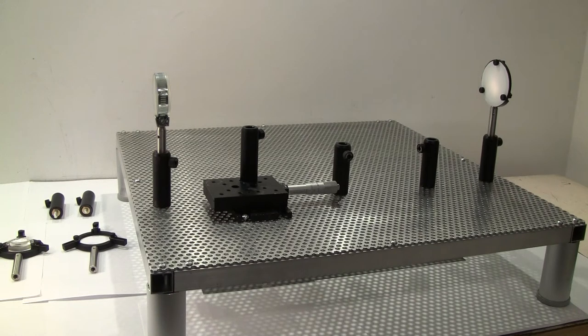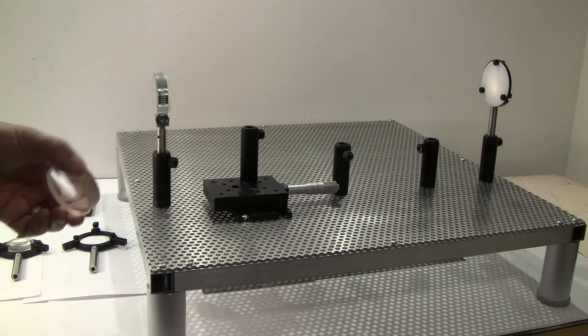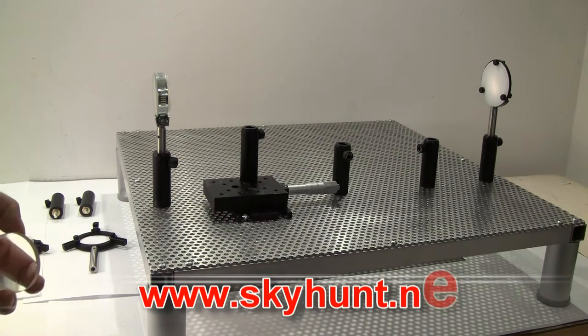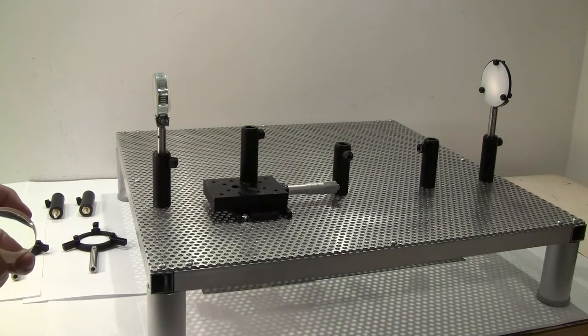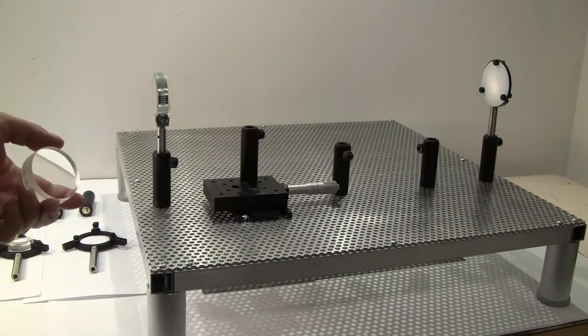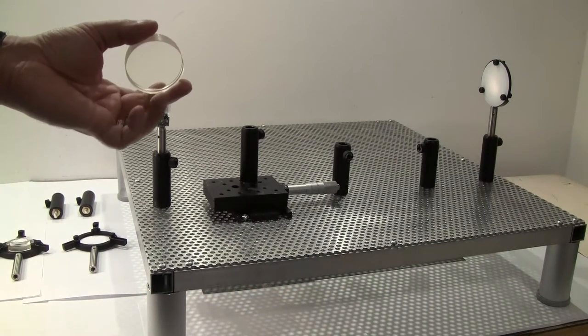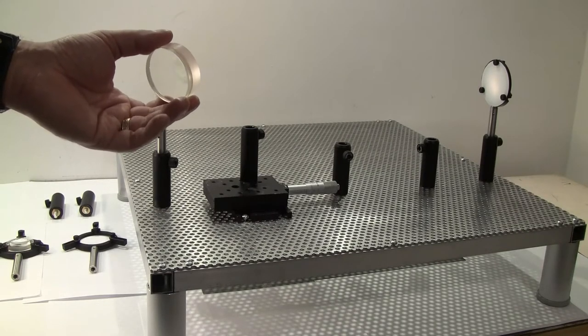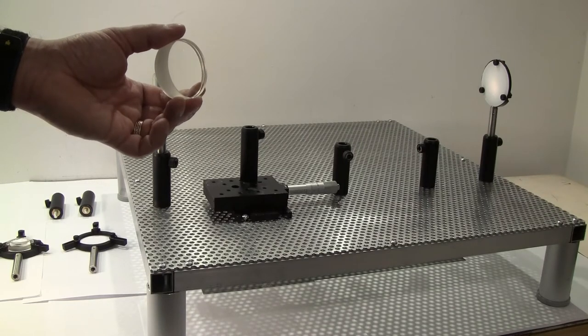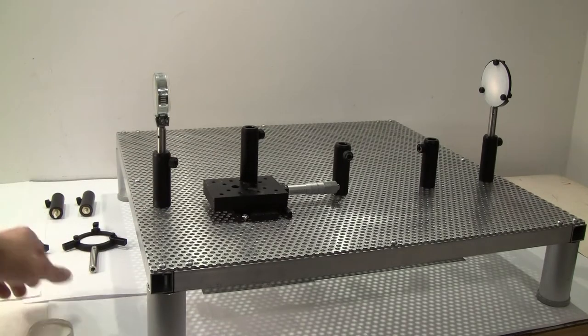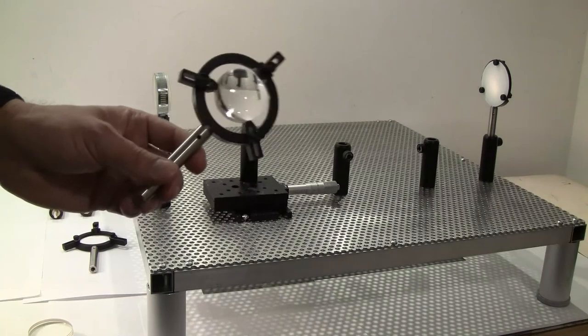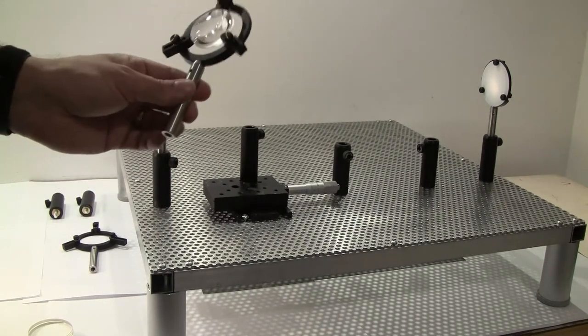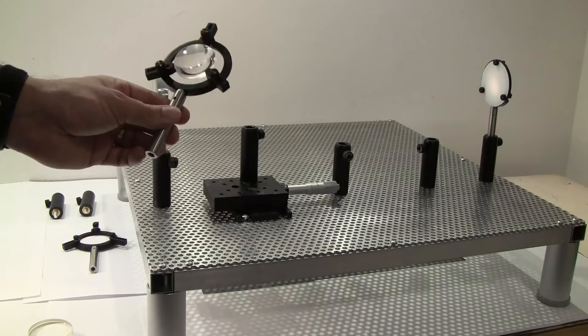Today we're going to be building a simple refracting telescope on this optical bench which is available from Skyhunt at www.skyhunt.net. We're going to be using some simple optical parts - an objective lens, in this case a low-cost achromatic lens which is two lenses cemented together for better color correction. We're also going to be using another simple lens which will be our eyepiece, and we've got various mounting holders for the lenses.